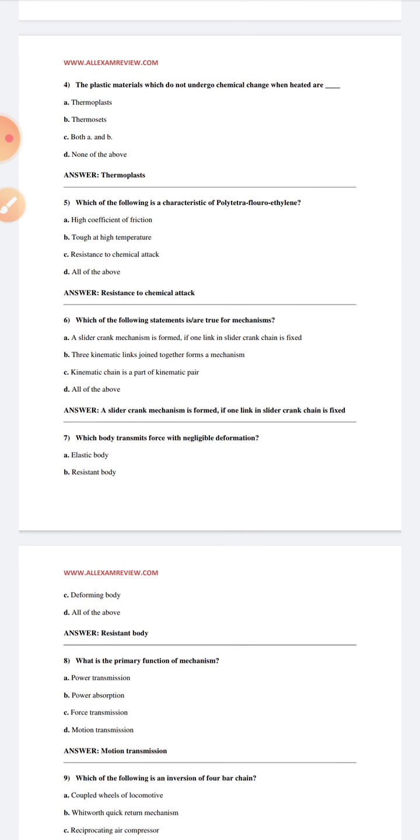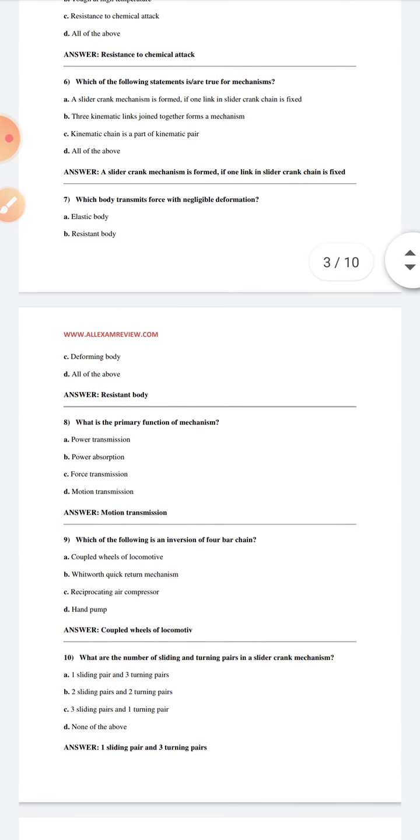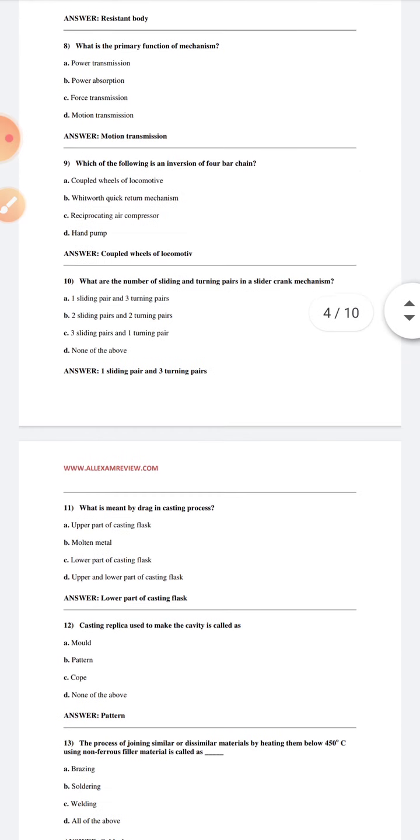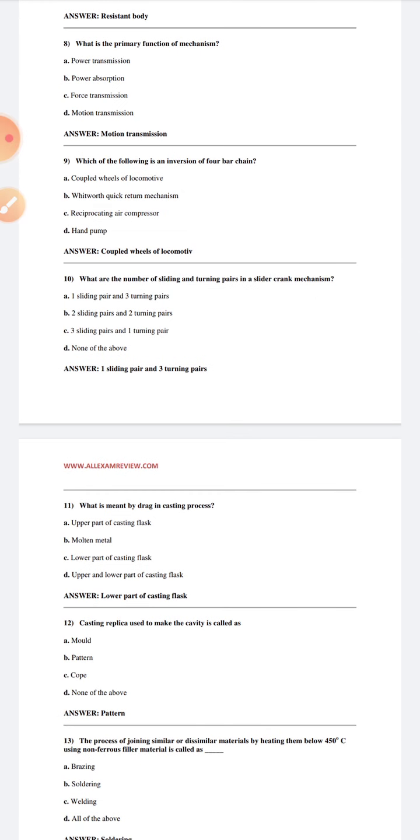What is the primary function of mechanism? Motor transmission. Which of the following is an inversion of four bar chain? Coupled wheel of locomotive. What are the number of sliding and turning pairs in a slider crank mechanism? One sliding pair and three turning pairs. What is meant by the drag in casting process? Lower part of casting flask.